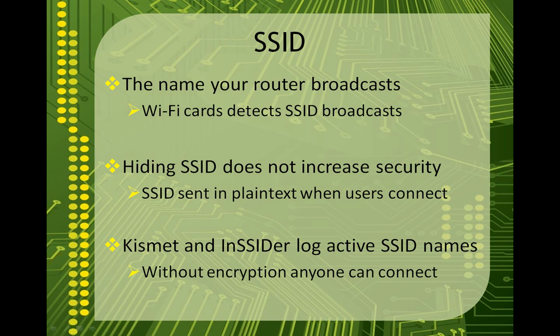Your SSID is where your wireless network begins. It's the name that your router broadcasts and the name you see in Windows when you go to your network locations and you'll see a list of wireless networks. This is most often set in your router's web configuration screens. Your Wi-Fi card simply detects the broadcast and adds it to your list. Some people hide their SSID in an attempt to increase their network security, but this doesn't really work.